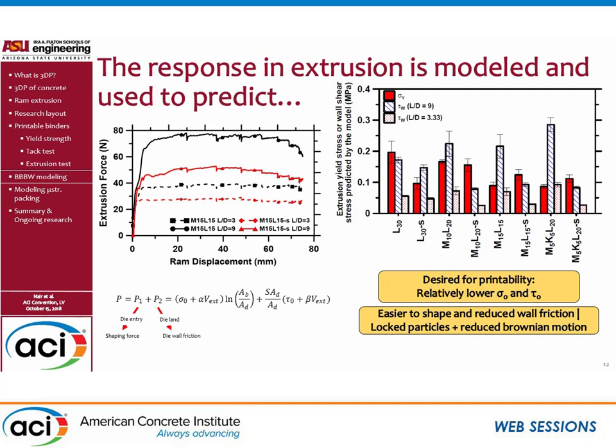The reduction in wall shear stress occurs because when particles pass into the die, they get locked and there is reduced Brownian motion. In non-printable mixes, particles are more scattered and the Brownian motion increases friction along the wall. Although superplasticizer mixes have a higher particle fraction, there is a reduction in wall stresses due to this reduced Brownian motion.